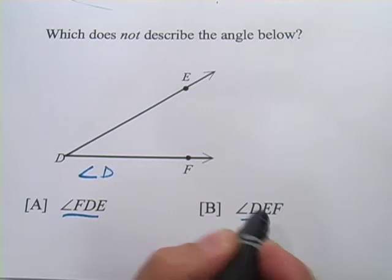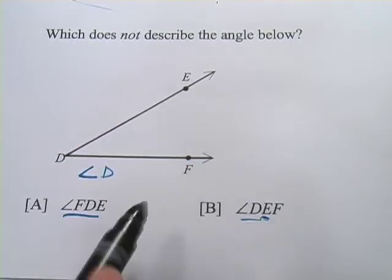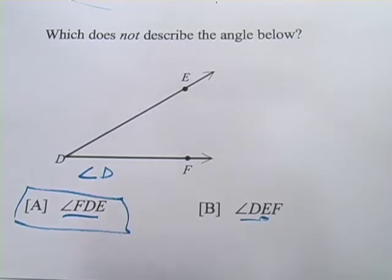And then another choice is DEF. Well, that does not work because E is in the middle, and E is not the vertex or the point of the angle. So the correct answer here is going to be this one.